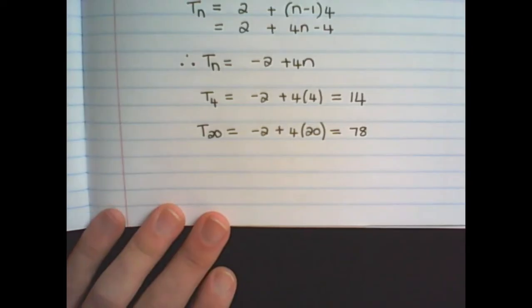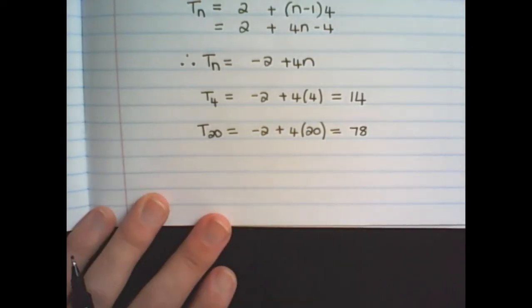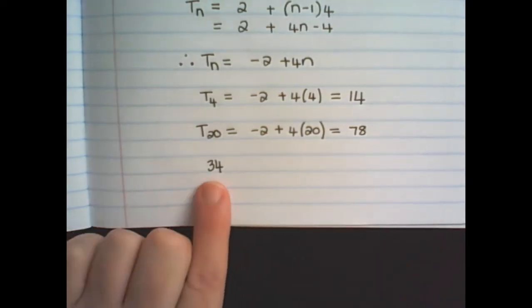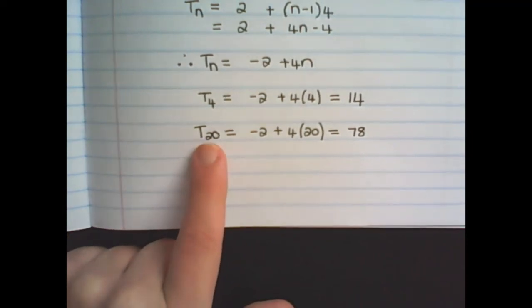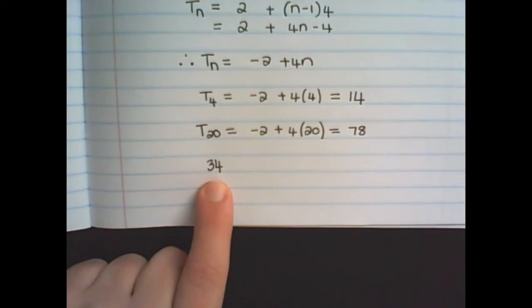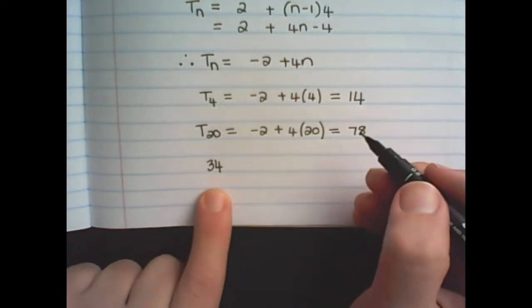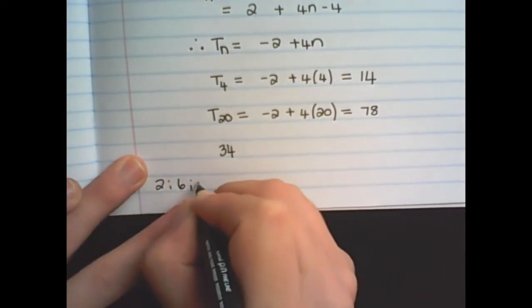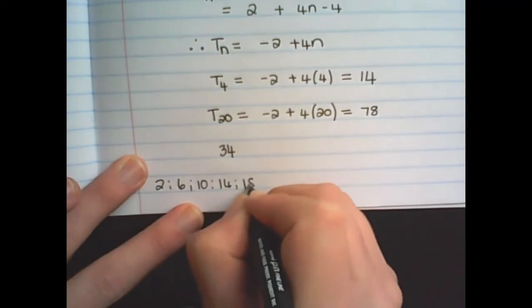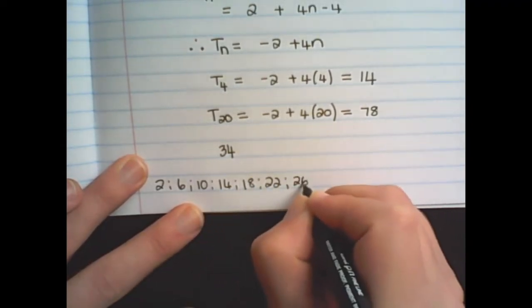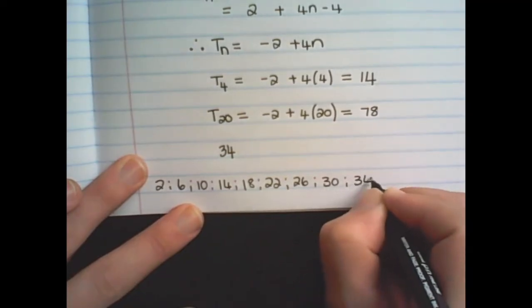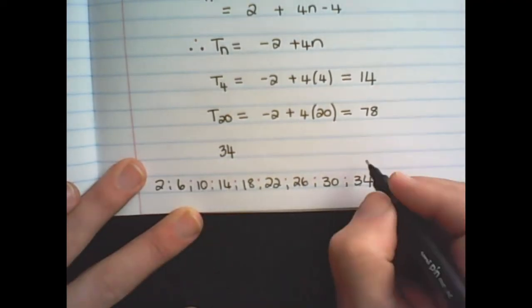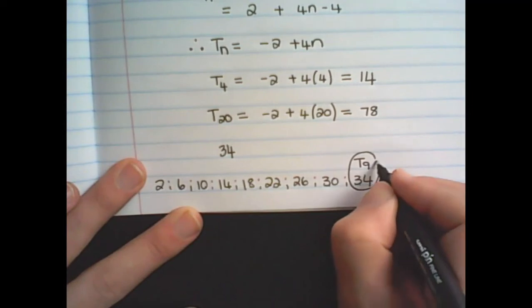I can also ask which term or what is the position of 34 in the pattern. Now, this is not referring to term 34, but which term is equal to 34. So if I were to complete the pattern, it would be 2, 6, 10, 14, 18, 22, 26, 30, 34. So I can see that 1, 2, 3, 4, 5, 6, 7, 8, 9, that term 9 is equal to 34.